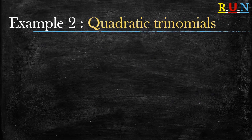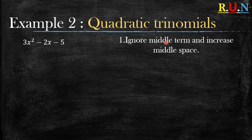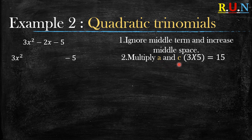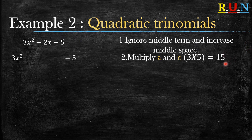Example number two: let's follow the rules. Ignore the middle term — which is now negative 2x — and increase the middle space. Rule two: multiply a and c. Our a is 3, our c is negative 5. For now, ignore the negative sign and say 3 times 5 gives positive 15.